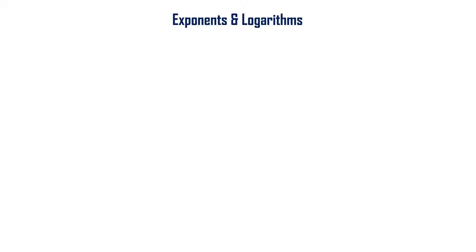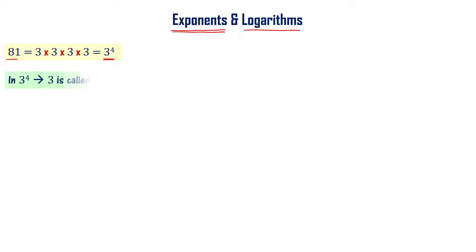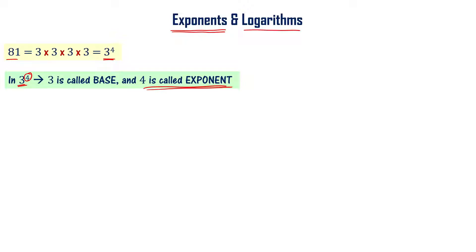Let us now learn about logarithms. Before that, let's quickly recall what we mean by exponents. We know that 81 can be written as 3 power 4. In 3 power 4, 3 is called the base and 4 is called the exponent. 81 is the fourth power of 3.